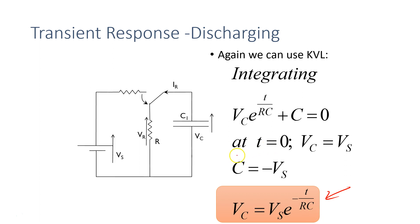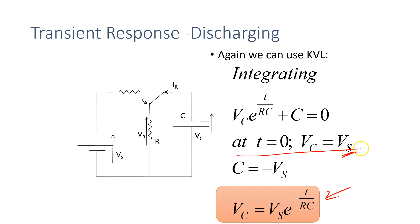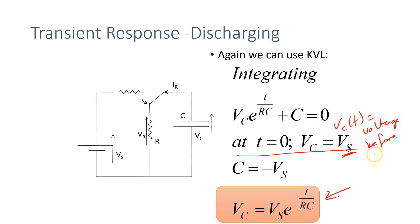When solving for the discharging case, note that at T=0 the voltage across the capacitor is not zero as in the charging case — it equals Vs, or whatever the capacitor voltage was when it switched. Here we use Vs because we assumed it was closed for a very long time and charged all the way up. If it was not fully charged, Vc would equal whatever the voltage was before switching. This is a very important point to remember.